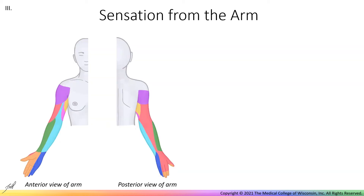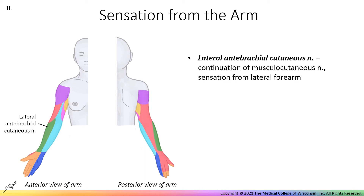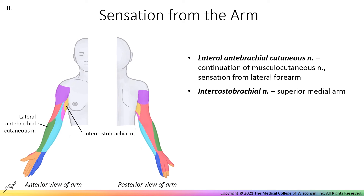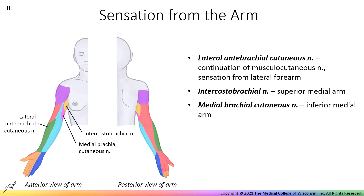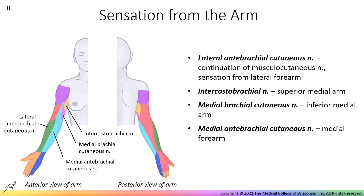Sensation from the skin of the arm is transmitted by several nerves. Sensation from the lateral forearm comes from the lateral antebrachial cutaneous nerve, which is a continuation of the musculocutaneous nerve. The intercostal brachial nerve is a branch of the second intercostal nerve and innervates a small patch of skin on the superior medial arm. Sensation from the inferior medial arm comes through the medial brachial cutaneous nerve, while sensation from the medial forearm is from the medial antebrachial cutaneous nerve. Finally, sensation from the posterior upper limb comes through the radial nerve.